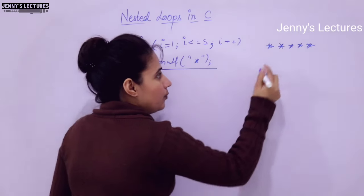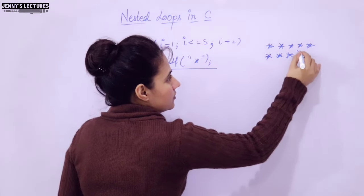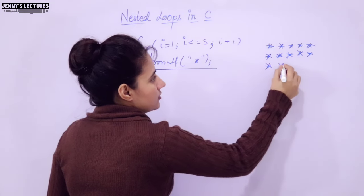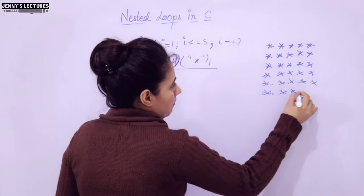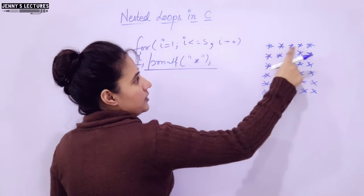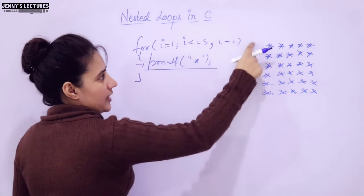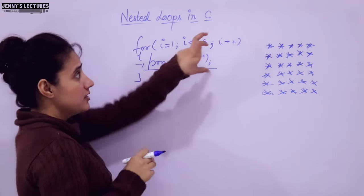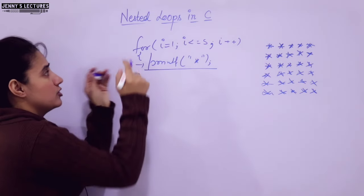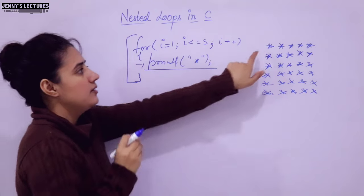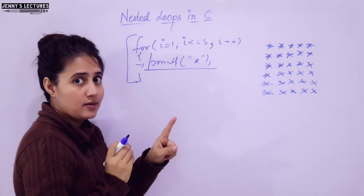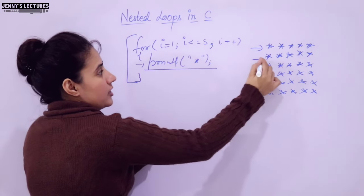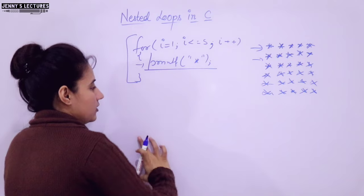Suppose I want to print five stars per line, and these lines should be 5, 10, or 6 lines. So I want to print five stars — how many times? 6 times, 6 lines. Now what will you do? One method is: using this for loop, I can print one line of 5 stars. Maybe you can do one loop for this line, another for loop for the next line, another for loop for the next line.